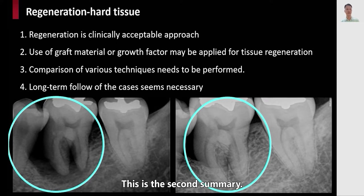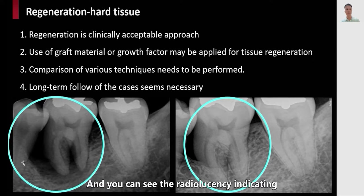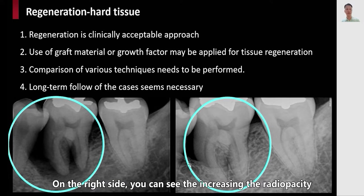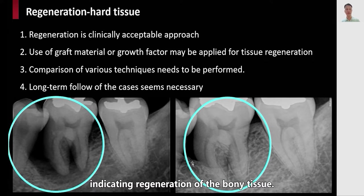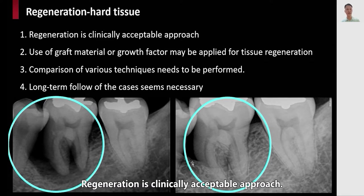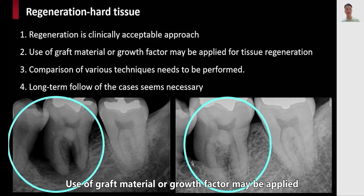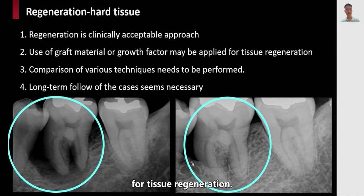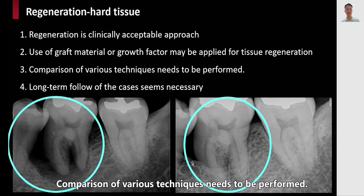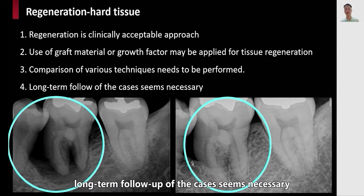This is the second summary. You may see the periapical radiograph on the left side showing radiolucency indicating the loss of periodontium. On the right side, you can see the increase in radiopacity indicating regeneration of the bony tissue. The summary is as follows: regeneration is a clinically acceptable approach; use of graft material or growth factors may be applied for tissue regeneration; comparison of various techniques needs to be performed; and lastly, long-term follow-up of these cases seems necessary.